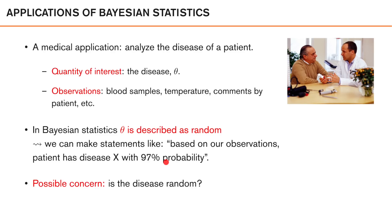A possible concern one can have regarding the Bayesian way of viewing things is whether it's actually valid to say that the disease is random. Surely, the patient has gotten a disease and not any random disease. However, there are many advantages with viewing the disease as random. In many situations, we will not be able to determine with 100% certainty which disease the patient has. By viewing the disease as random, we can also express our uncertainty — for example, perhaps it's 97% probability that the patient has the flu, but with 3% probability it's just a common cold. When deciding on appropriate action, it's surely beneficial to know with which certainty a diagnosis can be reached.